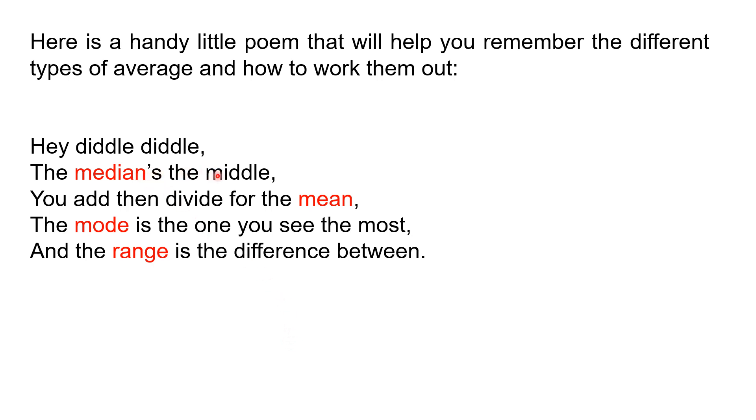So the median, the median is a type of average and it's the middle number in a given set of numbers. You add and divide for the mean. So the mean is a different type of average again. It's the one where you add all of the numbers up and divide by how many numbers there are.